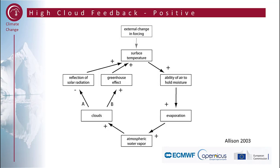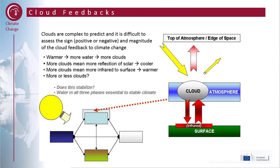The cloud feedback is different — it can be positive and negative. We start with the external forcing, which changes the surface temperature. If the surface temperature increases, the ability of the air to hold moisture also increases, which increases evaporation, increases atmospheric water vapour, and increases clouds. But there are two kinds of clouds: one that reflects a lot of solar radiation, and the kind that increases the greenhouse effect. Clouds are very complex to predict, and it is difficult to know whether they result in positive or negative feedbacks.